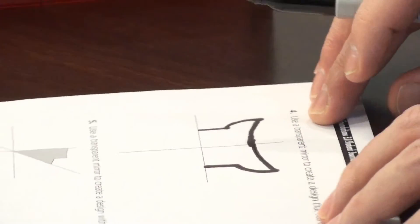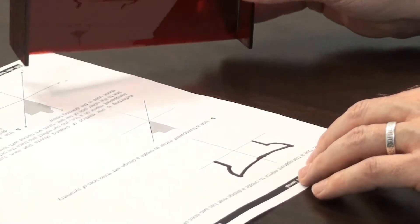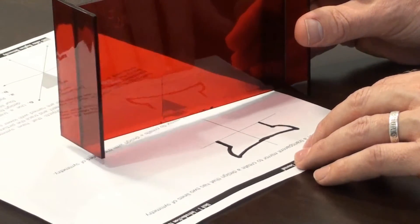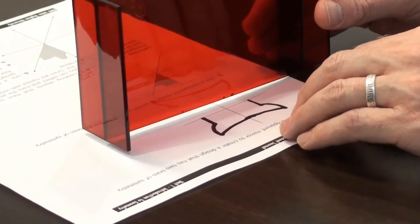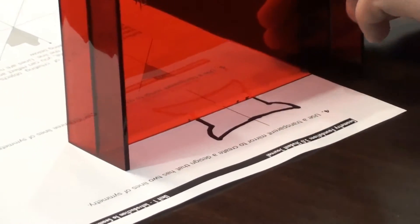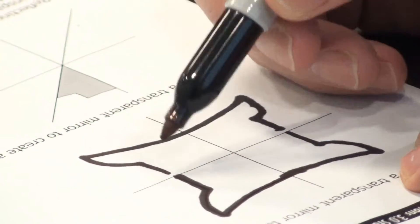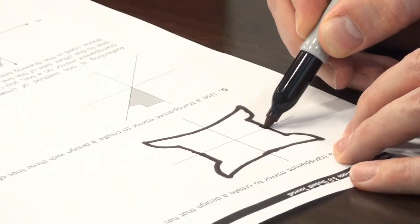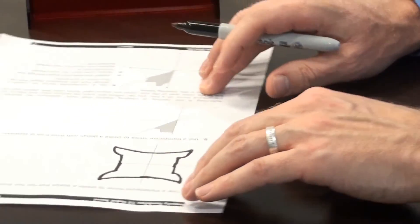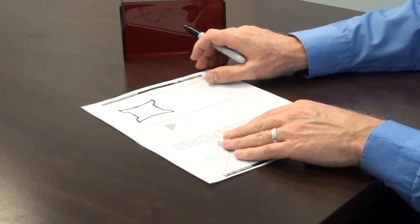Rotate the newly traced object. Place the transparent mirror's beveled edge on the second line so that it is reflected by the transparent mirror. You can now trace the image again. Fill in the small gaps created by the transparent mirror's beveled edge. And you can see that we have created a complete 360 degree object with two lines of symmetry.